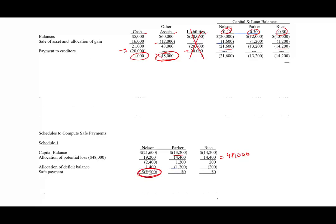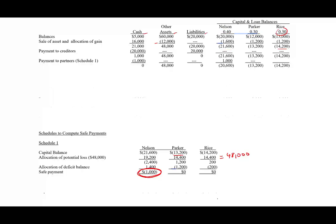Since Nelson is expected to survive to the end, the first $1,000 goes to Nelson, reducing his balance to $20,600. Nelson has the largest capital balance, so there's a good chance he survives the other two — although he gets 40% allocation of profit, he also absorbs more losses. But his largest capital gives him the advantage.